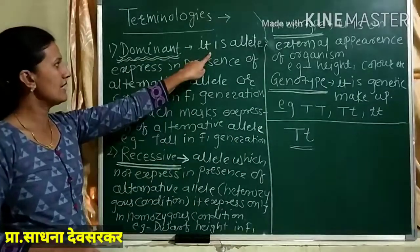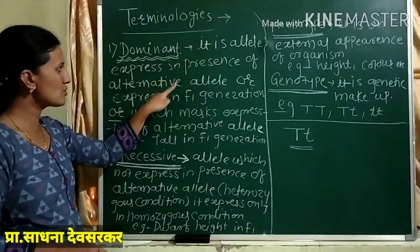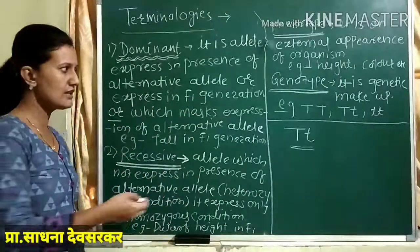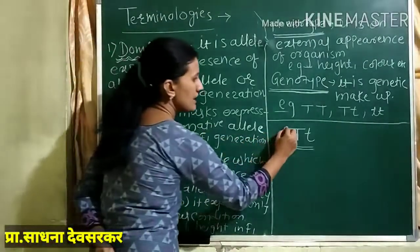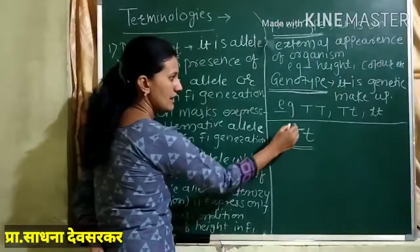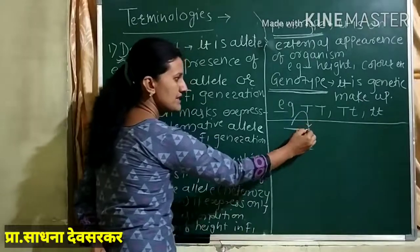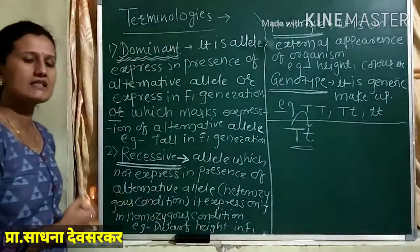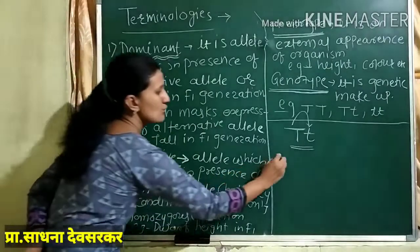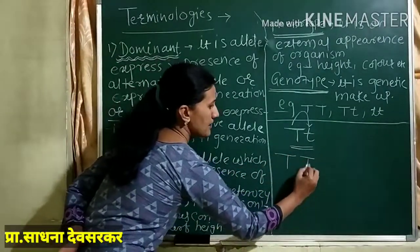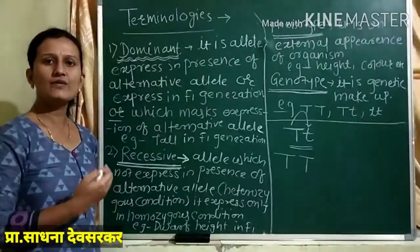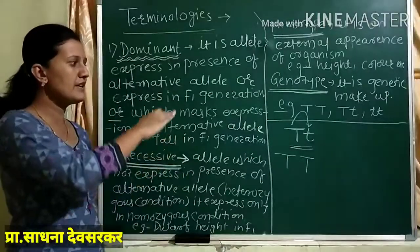It is an allele which expresses in the presence of its alternative allele, that is the small t. Capital T is expressed in the presence of small t. Capital T stands for the tallness of the pea plant — tall height of the pea plant.